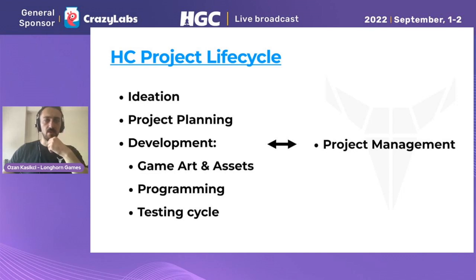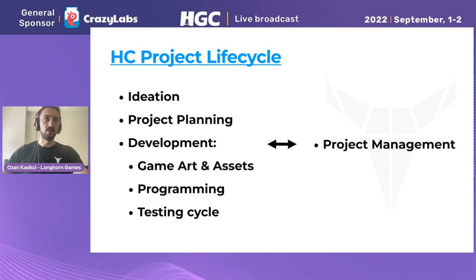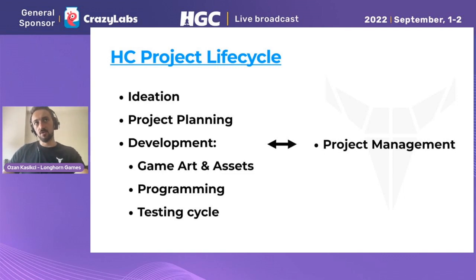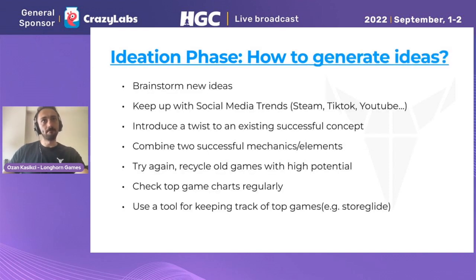That's a typical hyper casual game. What does a hyper casual project life cycle look like? We start with the ideation phase because we need an idea to build upon first. Once we have the idea, we plan the project, then development starts — art and assets are defined and created, we program the game, and then if everything goes well we start testing. Project management is always involved throughout the entire development of the project.